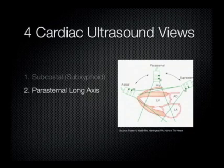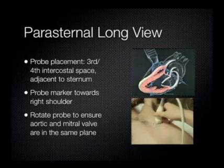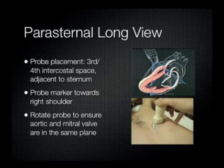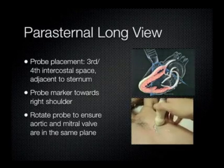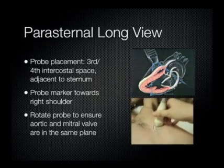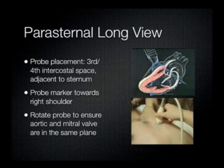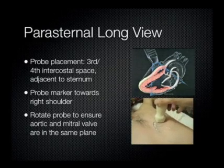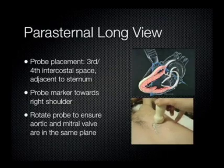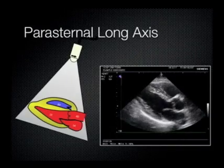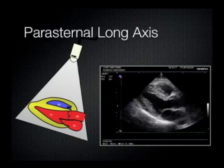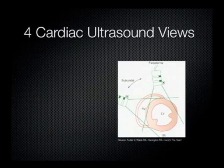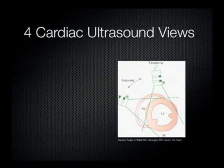Now let's discuss the parasternal long axis. Personally, I think this is the easiest view to obtain. You want to place the probe perpendicular to the chest wall in either the third or fourth intercostal space left of the sternum. For this view, you want to keep the probe perpendicular, as opposed to the subcostal view where we kept the angle low to the chest, and point the probe marker to the patient's right shoulder. Better views can be obtained if you keep the patient towards his or her left side. You want to rotate the probe so that the aortic and mitral valves are in the same plane. For this view, you'll be able to visualize the left ventricle, the right ventricle, interventricular septum, mitral valve, and aortic outflow tract.